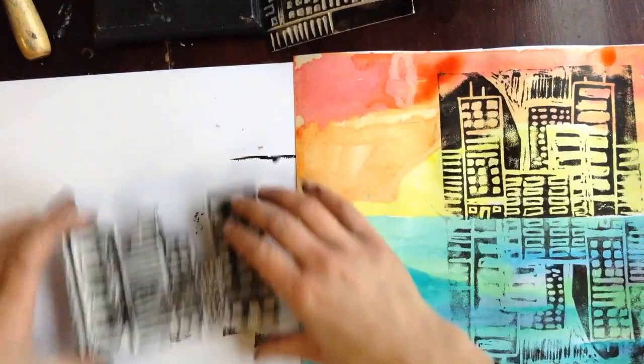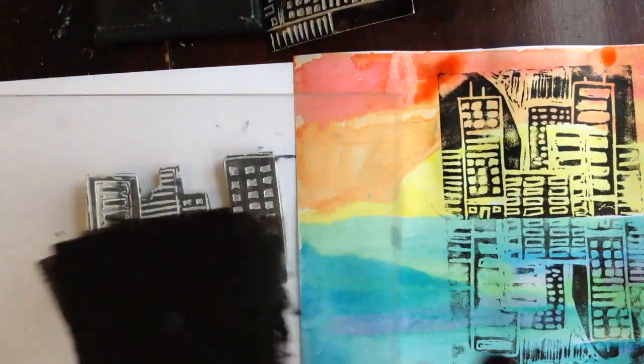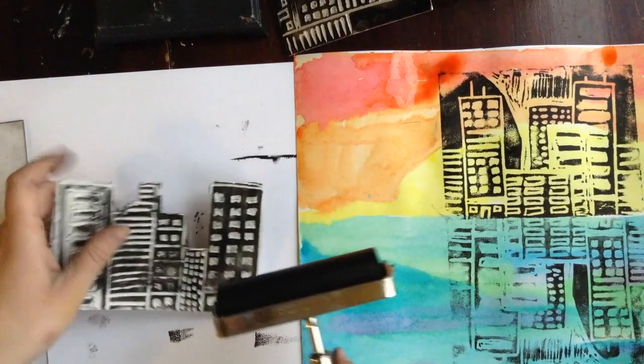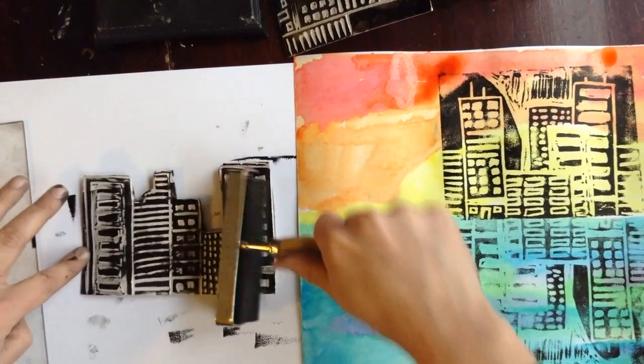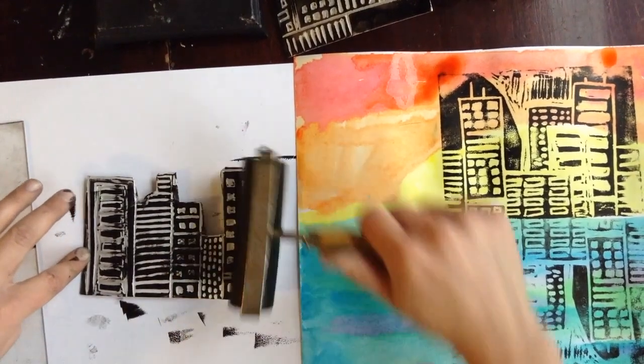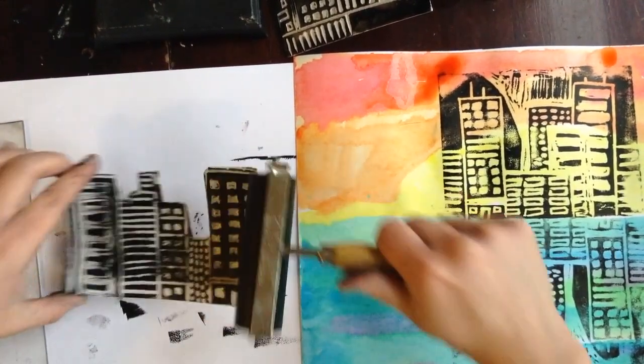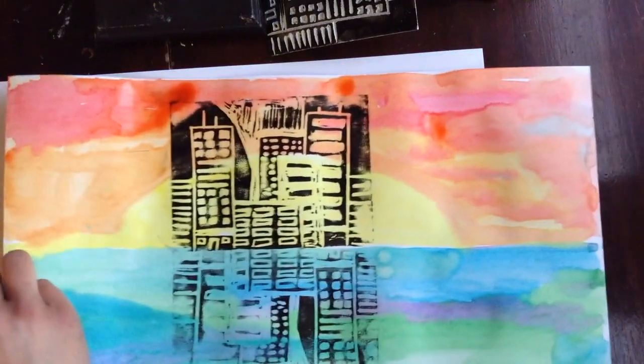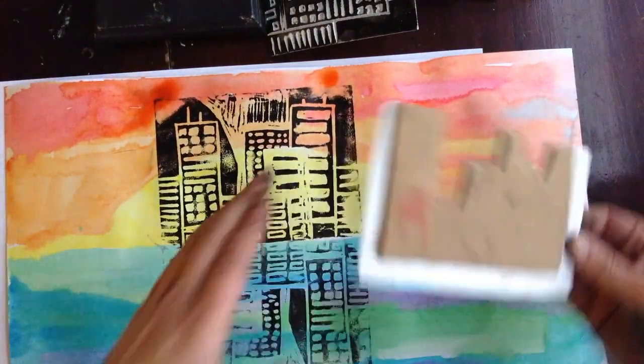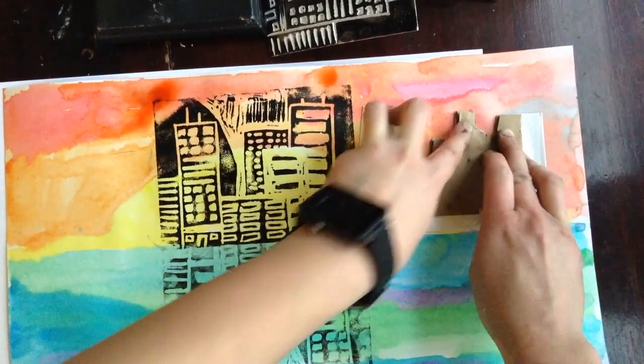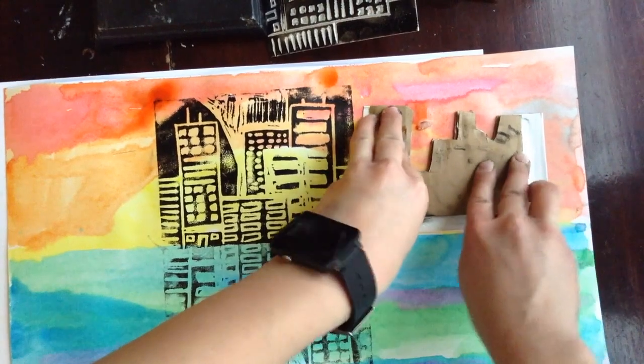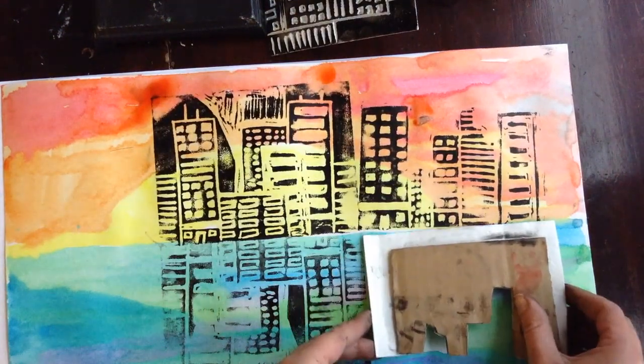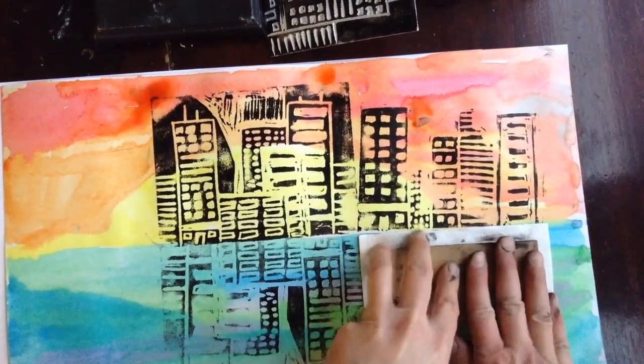All right, I'm going to ink this one up. Bring this over. Take my city and press. Lift it up. There's my city. I can flip it to make that ghost print for the second print.